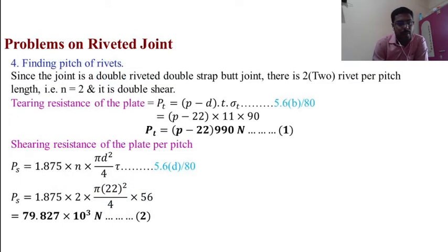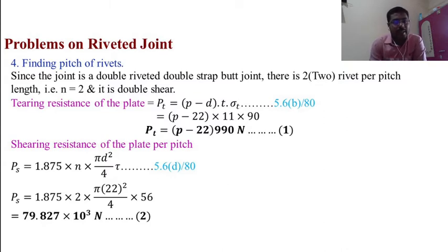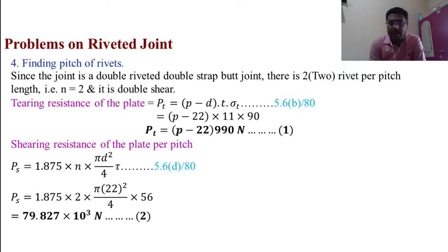Fourth, finding the pitch of the rivet. Since the joint is a double riveted double strap butt joint, there are two rivets per pitch length, so n = 2. It is a double shear joint. The tearing resistance of the plate per pitch: Pt = (P − d) × t × σt = (P − 22) × 11 × 90 = (P − 22) × 990 N. This is equation 1.